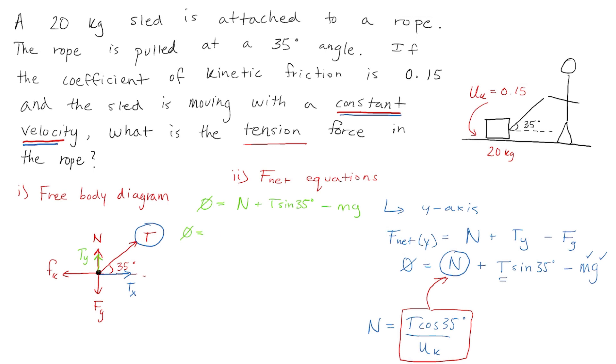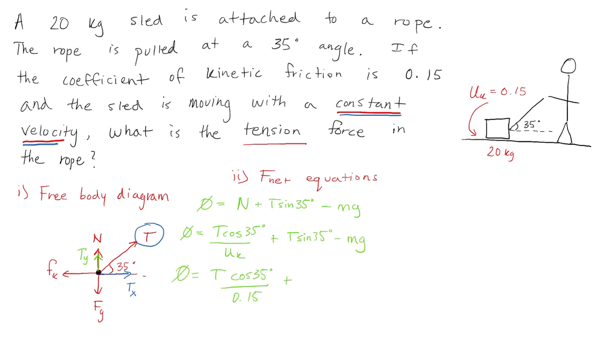So I will take my F net y equation. I will plug in the value for the normal force that we got from the F net x equation. And then I will start plugging in my values and simplifying the equation. And once I've plugged in my values and simplified the equation, we can see that the tension force is equal to 32.5 newtons.